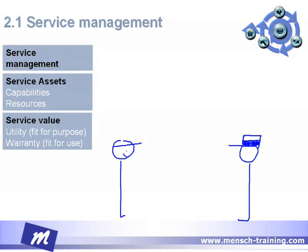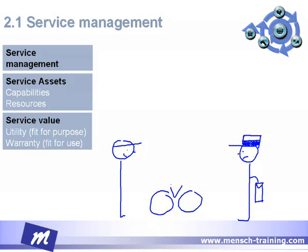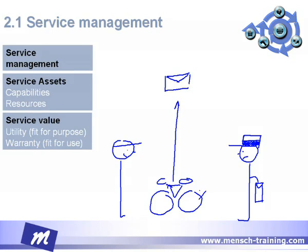The person that works in the bicycle repair shop, and this is the mailman. Let's draw a little bag where he carries all his mail. The mailman comes into the shop with a bicycle that he uses to deliver the mail, and the bicycle has a flat rear tire.